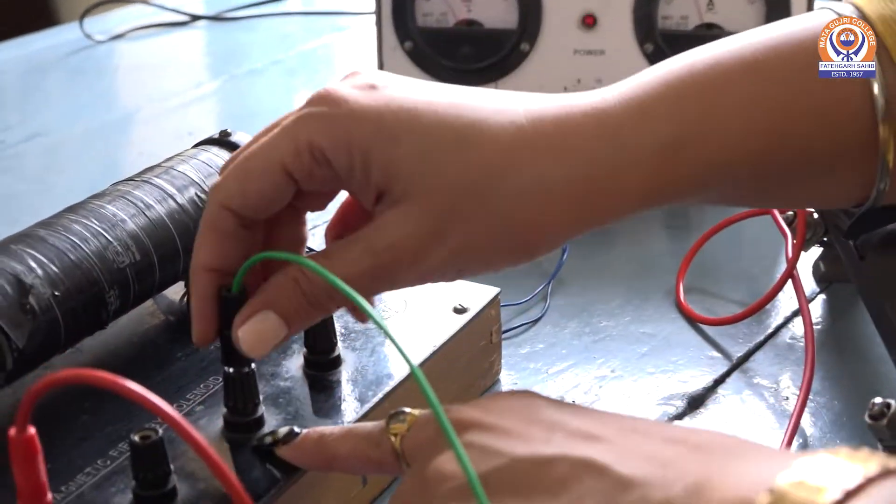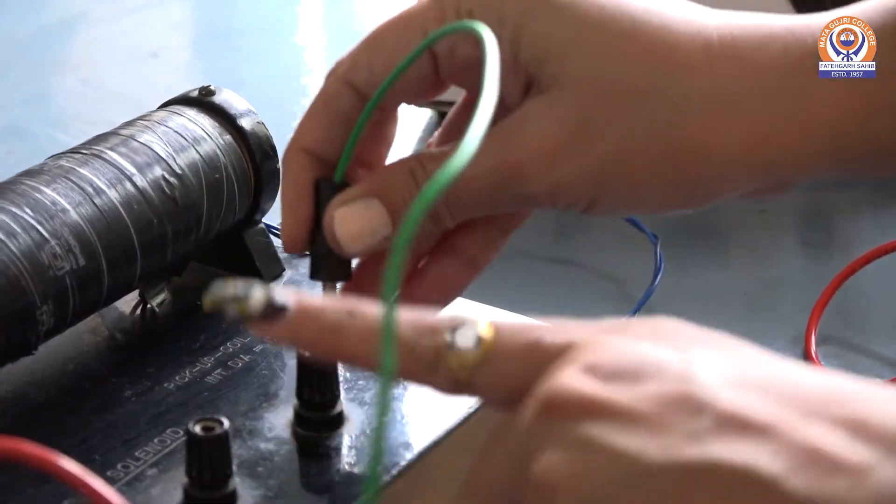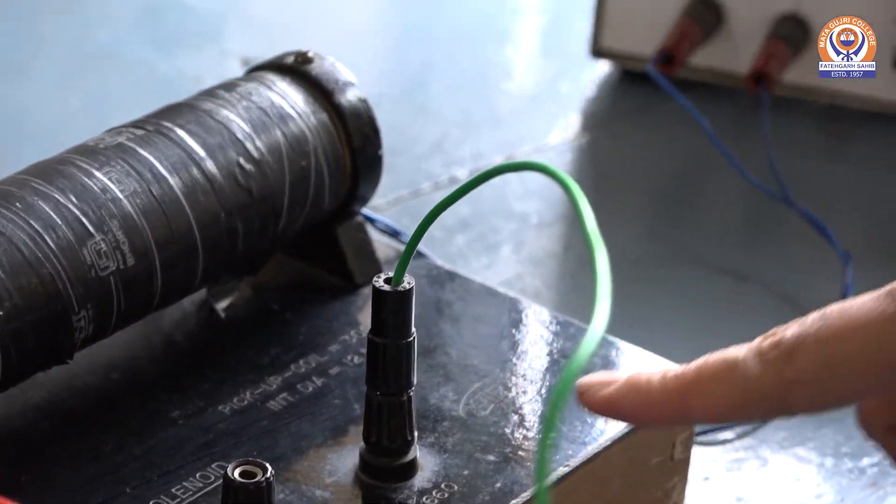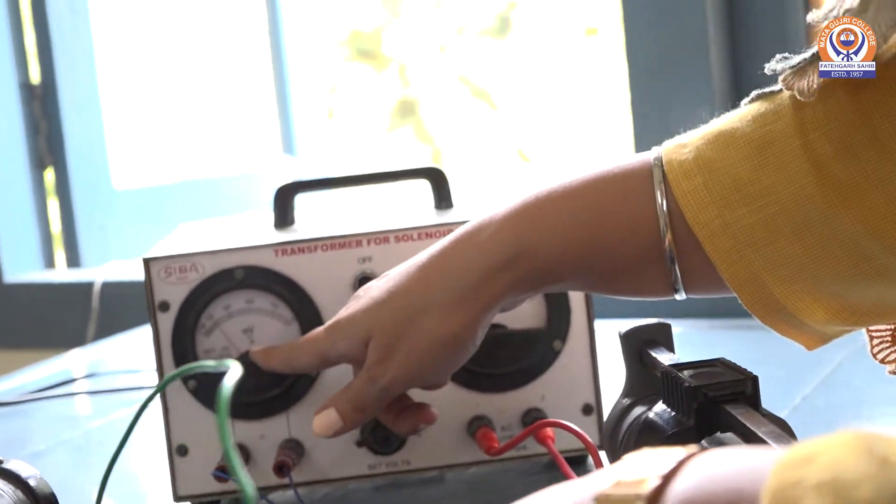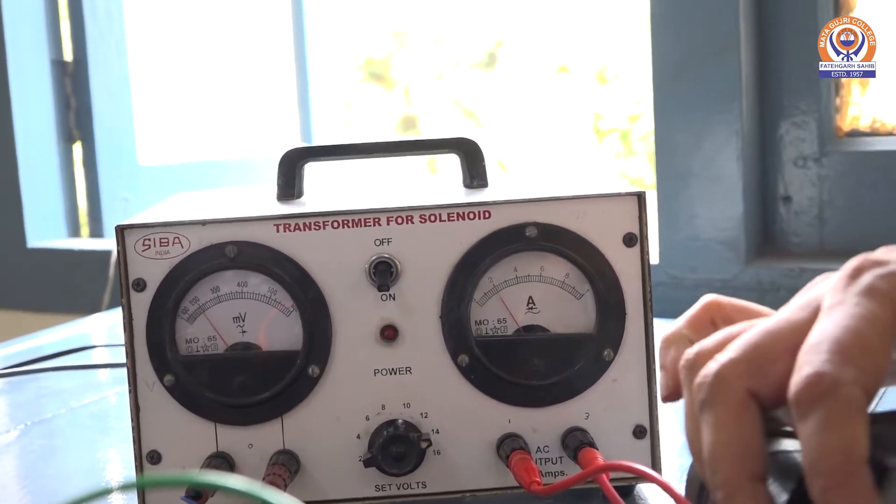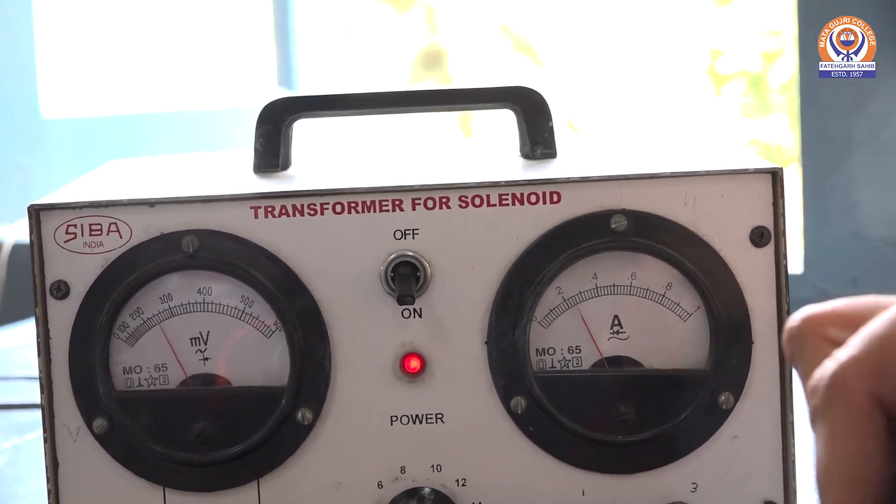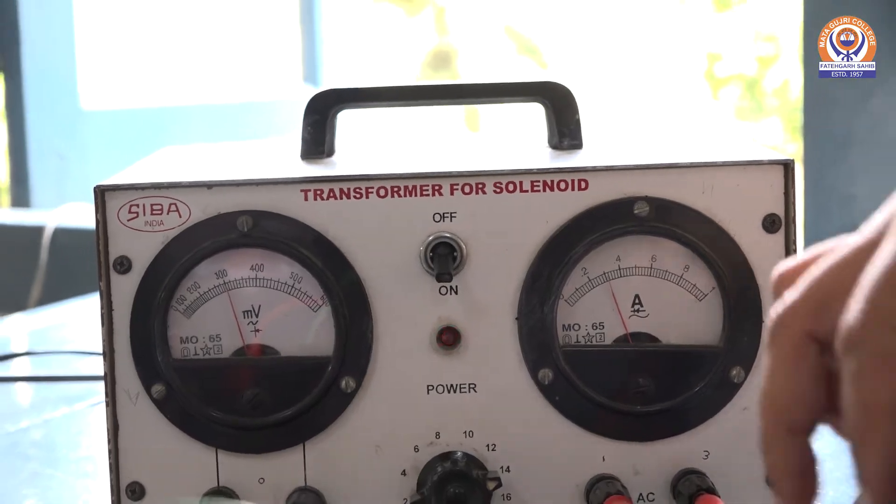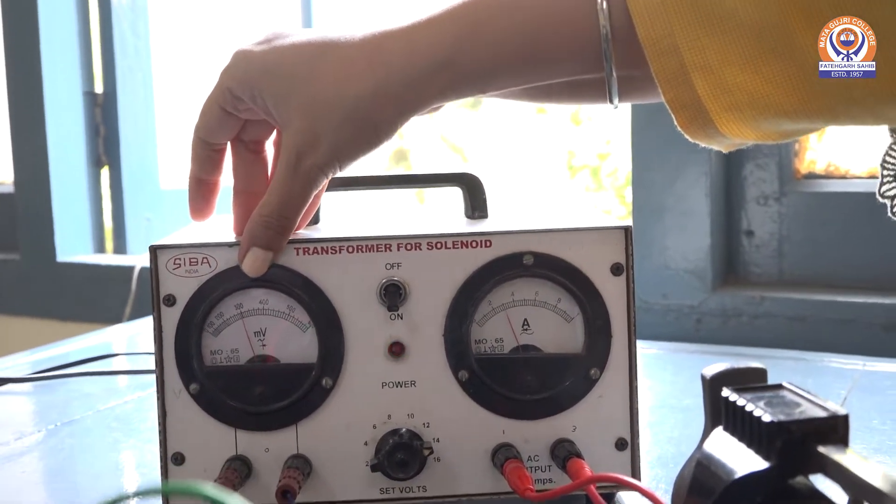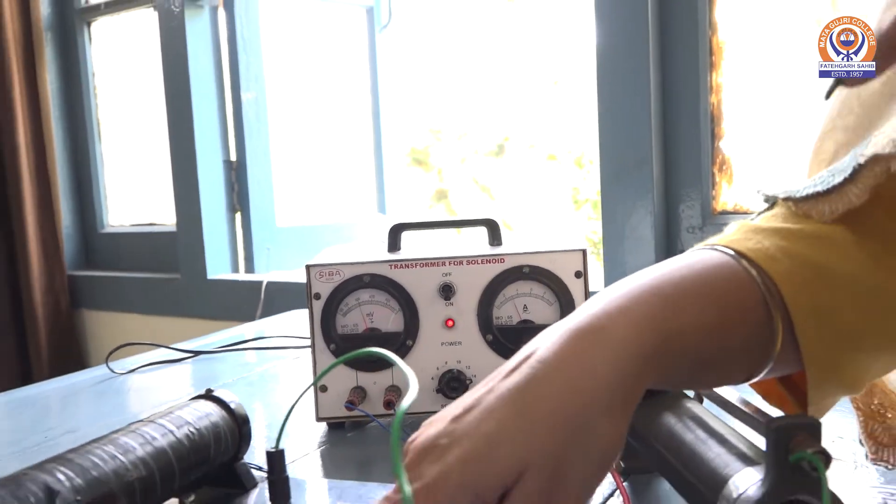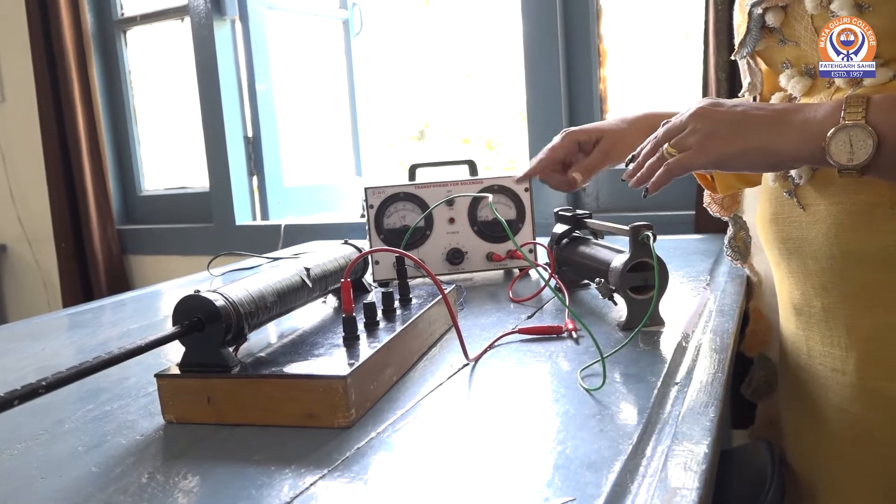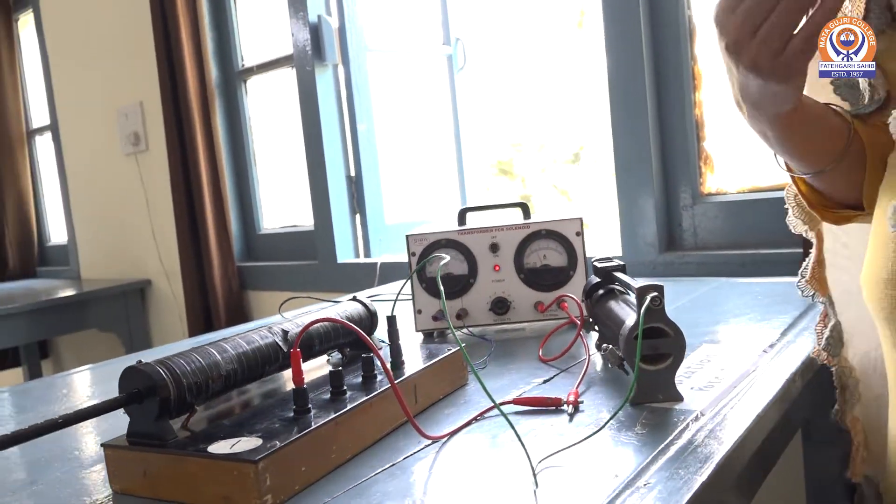Now I am further disconnecting this number of turns and I am connecting and increasing number of turns to 660. There is further increase while keeping the current constant at 0.3 ampere. You can see, millivolt meter reading has reached up to 300 millivolt. Means with increasing number of turns, there is an increase in induced EMF and E by N ratio remains same.